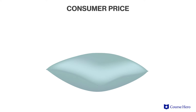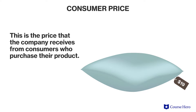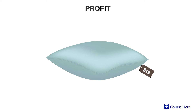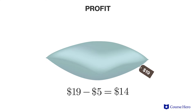Suppose a company makes pillows and sells each pillow for $19. This price is what the company receives from consumers who purchase their product. It's part of the revenue component of profit, but it doesn't say anything about how much the company spent to produce the pillow. If a pillow on average costs the company $5, the per pillow profit is simply $19 minus $5, or $14 per pillow.